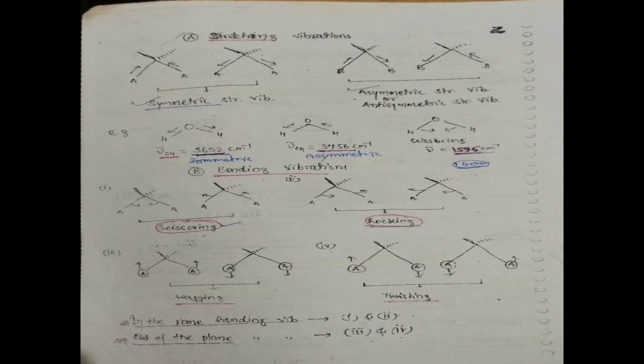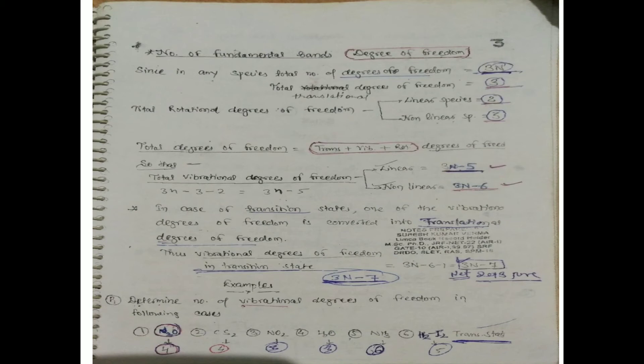Now, the number of fundamental bands, or degrees of freedom: in any species, the total number of degrees of freedom equals 3N, where N is the number of atoms. The translational degree of freedom is 3, and the rotational degree of freedom is 2 for linear species or 3 for nonlinear species. The total degree of freedom equals translational plus vibrational plus rotational.